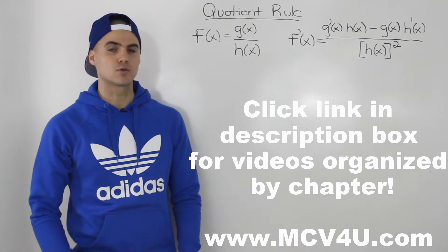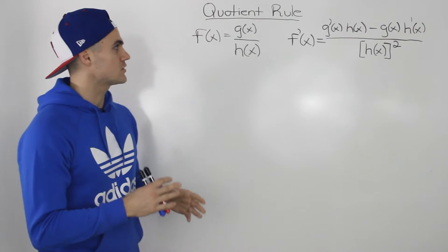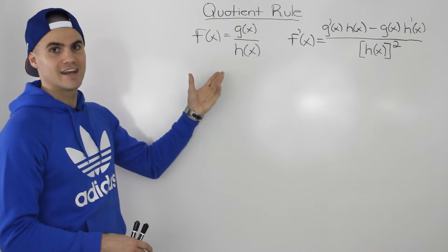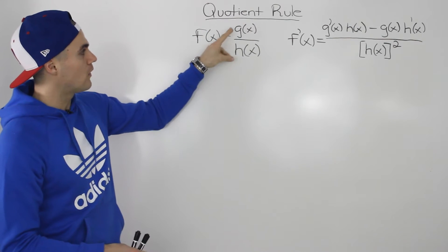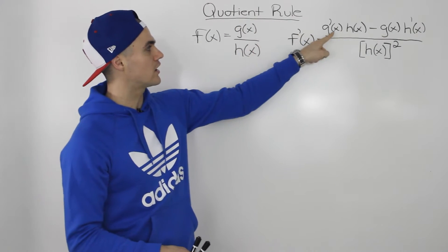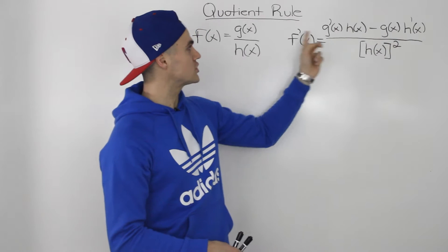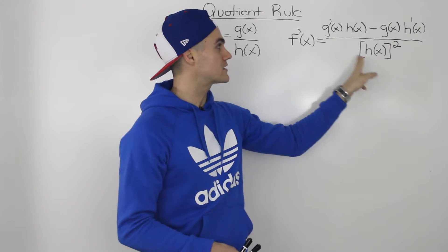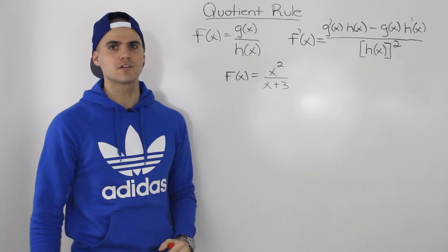Moving on to the next section, we're going to discuss the quotient rule for derivatives in this video. It's a rule we haven't covered yet. So basically, if you have a function f of x in the format of g of x over h of x, the derivative equals the derivative of the numerator times h of x, minus the numerator times the derivative of h of x, all over h of x squared.